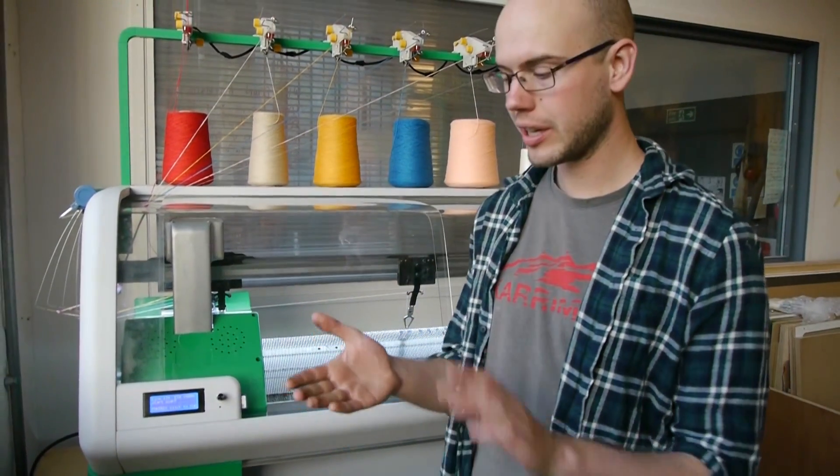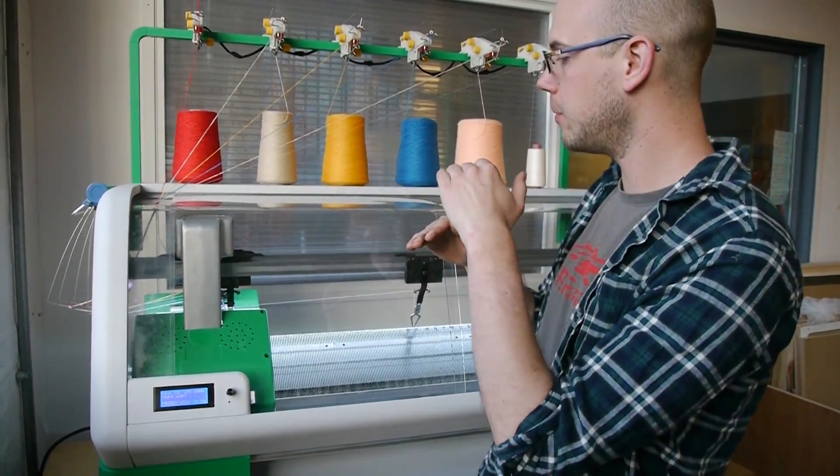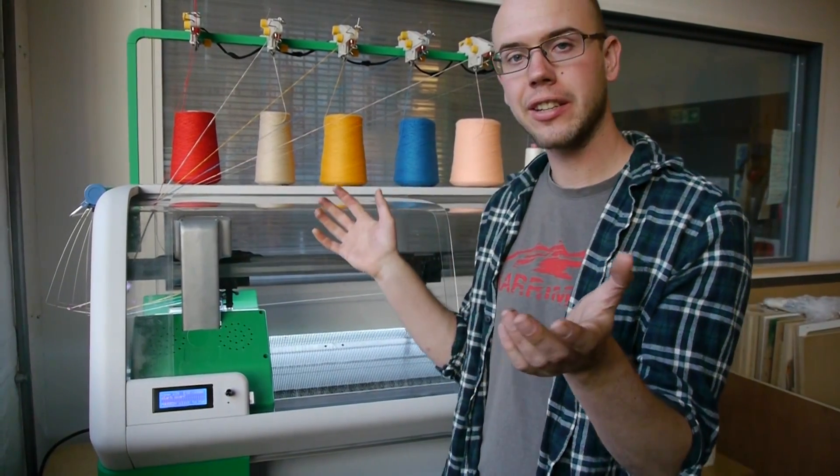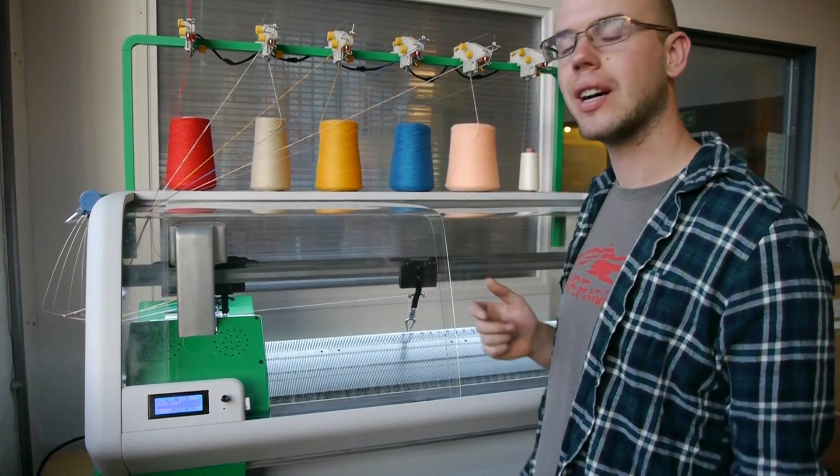So now it's cast on, we've got our waste yarn, and we've got a draw thread, then we've got a casting on. So the machine's all set up and ready to go, and the next thing it will do is it will start knitting the pattern that you saw on Photoshop at the start.